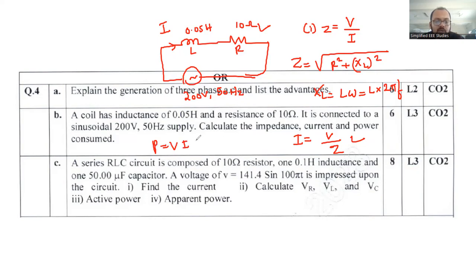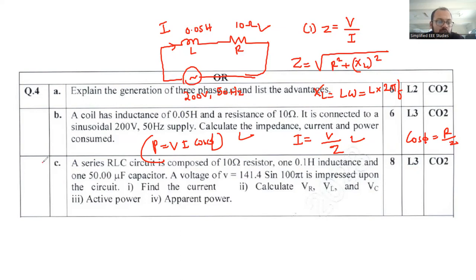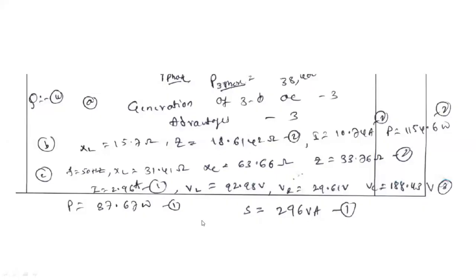Power consumed is P = VI cos φ, where cos φ is the power factor equal to R/Z. The answers for this problem are: XL = 15.7 ohm, Z = 18.6142 ohm, and power = 1154.6 watts.